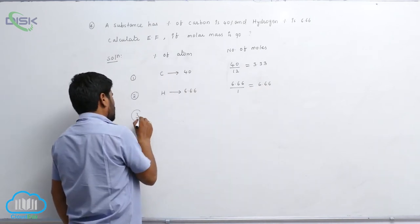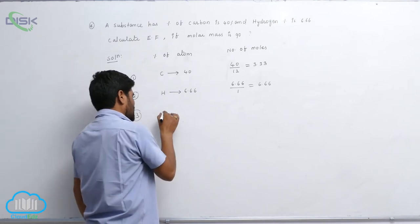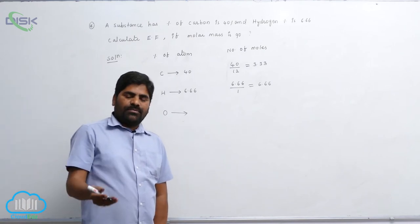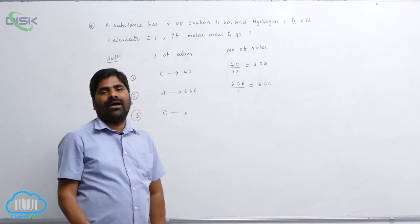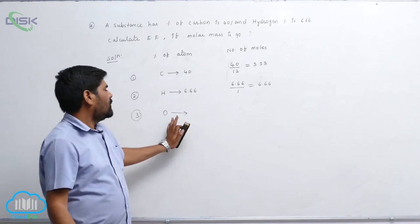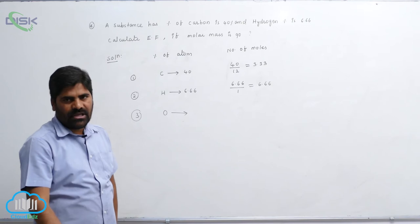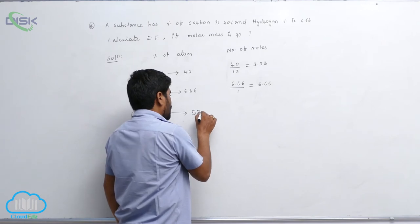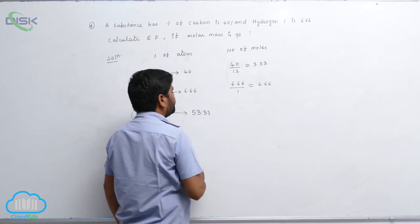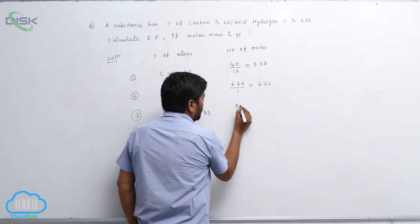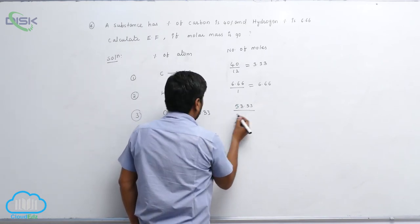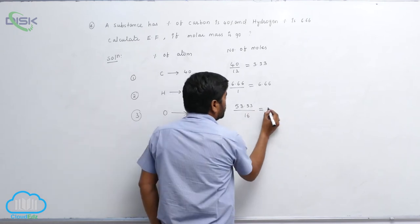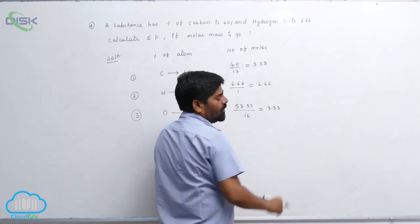The third element is oxygen. Whenever the percentages do not add up to 100, we make it 100 by adding the percentage of oxygen. So the percentage of oxygen is approximately 53.33%. Then 53.33 divided by 16 also gives 3.33 moles.